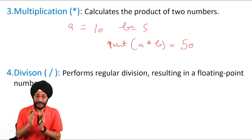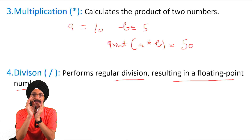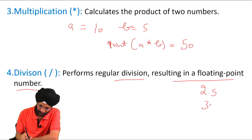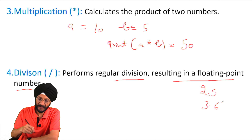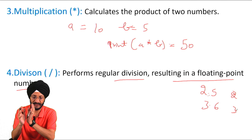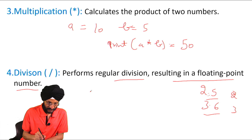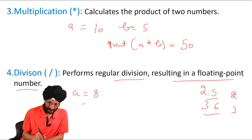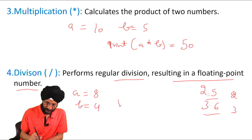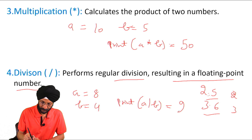Then there is the division operator. It performs regular division resulting in a floating point number. Floating point means a decimal number like 2.5, 3.6, or 4.6, while integers are whole numbers like 2 or 3. Here if a is equal to 8 and b is 4, then print a divided by b — 8 divided by 4 — the output will be 4.